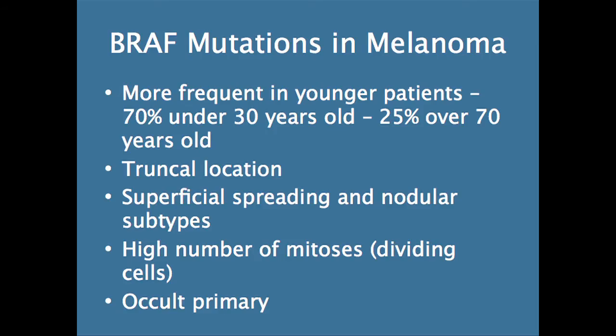BRAF mutations in melanoma are much more common in younger people than older people. About 70% of young people under the age of 30 have BRAF mutations. If you're over 70, only about 25%. They're usually melanomas located on the trunk and not the extremities — superficial spreading and nodular types, not other types like mucosal or acral lentiginous. When you look at the primaries, they have a high number of cells dividing. And usually, if you have metastatic melanoma but you can't find the primary tumor — what we would call occult primaries — they have a high incidence of having BRAF mutations.